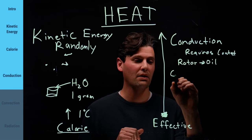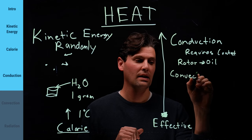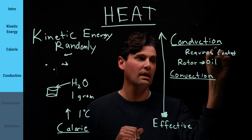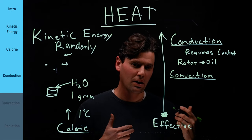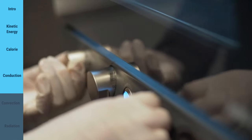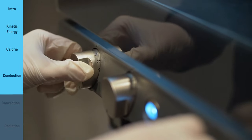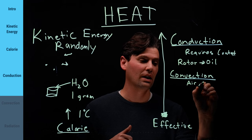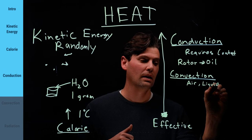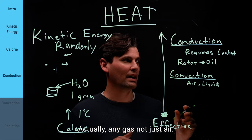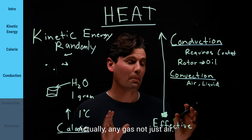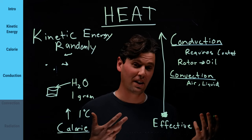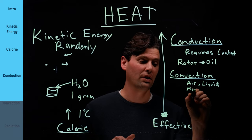Then convection. So convection is what occurs, for instance, inside of a convection oven. It's something that can occur in air or in a liquid. And what's happening is the hot molecules are actually being moved by something, for instance, that fan in the convection oven.